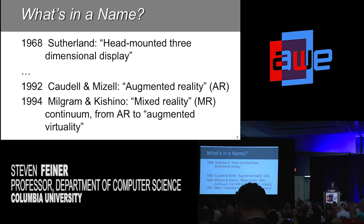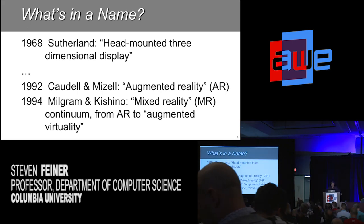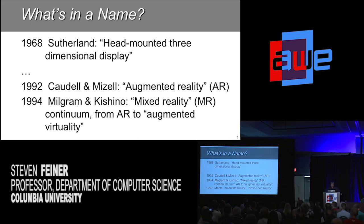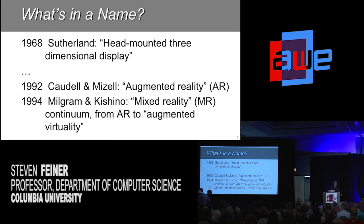Two years later, Paul Milgram and Fumio Kishino came up with the term mixed reality, or MR, which they used to refer to a continuum going all the way from AR — where you're augmenting reality, it's mostly reality with some virtual stuff added — to augmented virtuality on the other end, which is mostly virtual stuff with some real stuff added to it.